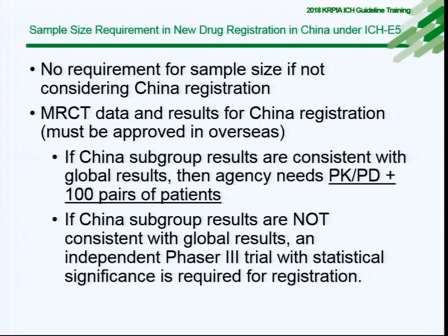From a statistical perspective on sample size calculation: if the clinical trial does not target China registration, there is no sample size requirement. Based on ICH E17, the agency previously proposed a simple approach — 100 pairs of patients (100 per arm) plus a local PK phase one study. If the China subgroup results are not consistent with global results, then an independent phase three trial with statistical significance is required for registration.